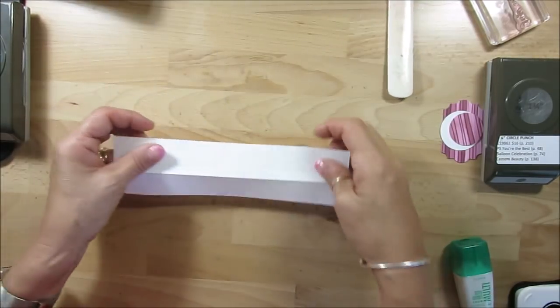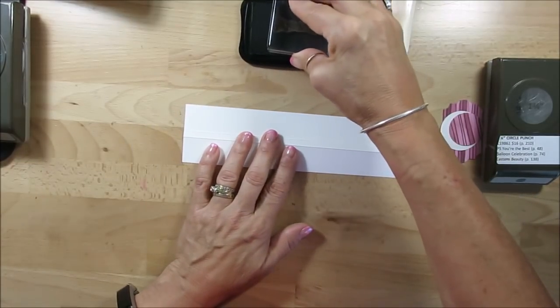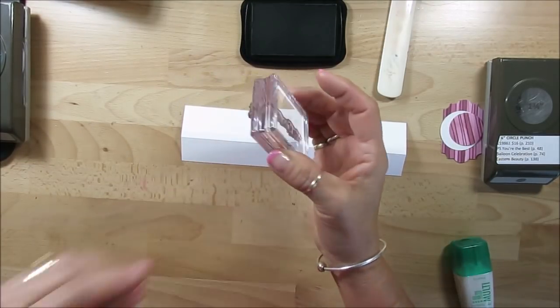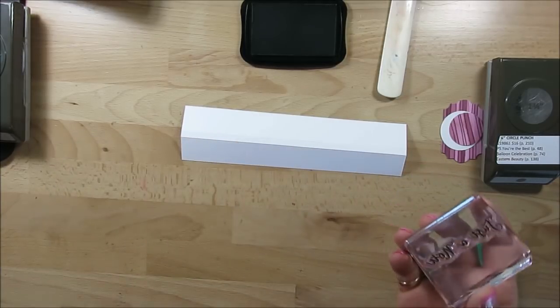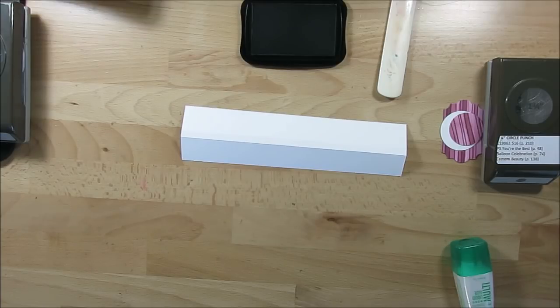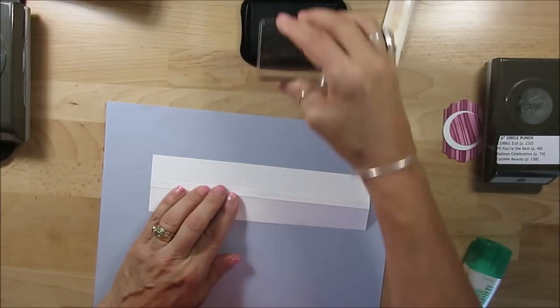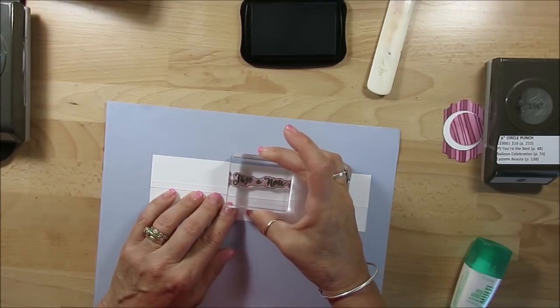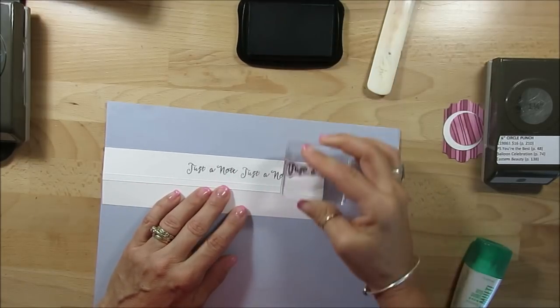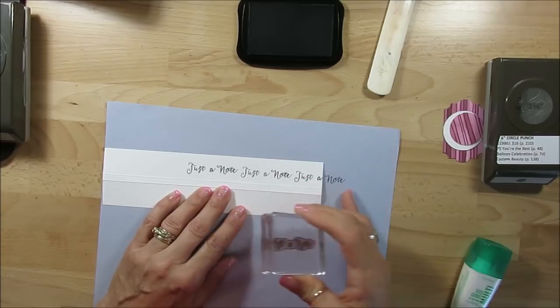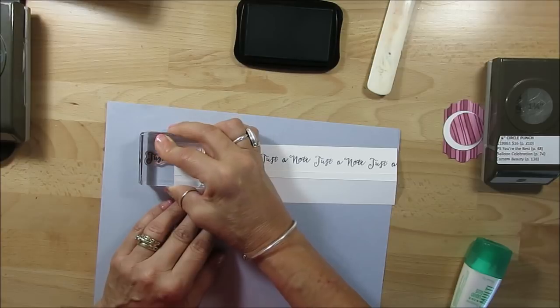Now we're going to stamp this here. I'm using Memento black ink, so we're going to stamp this. I need a scrap paper and I don't have one here. Here we go, because I'm going to start writing this about the center and then I'm going to keep on going. So that way it's going to be pretty much the right proportion on each side. See? Okay, that is done.